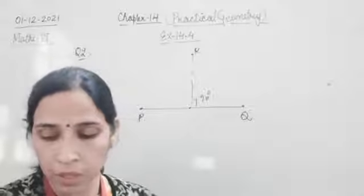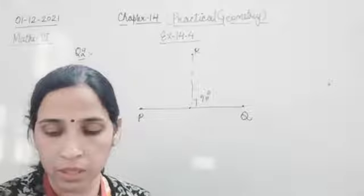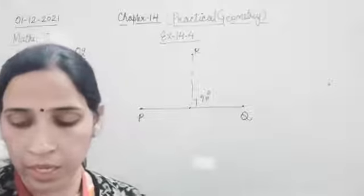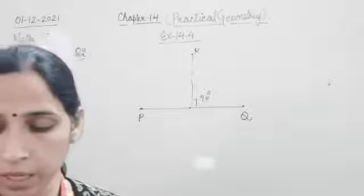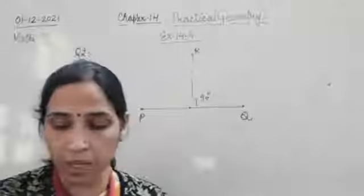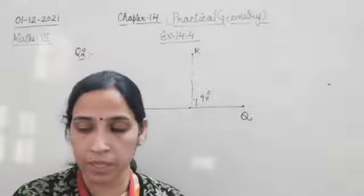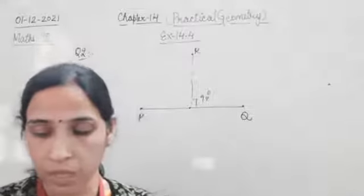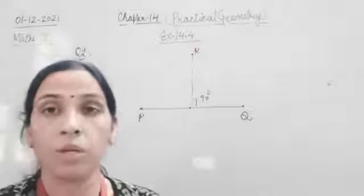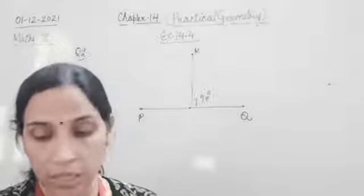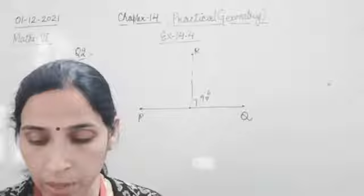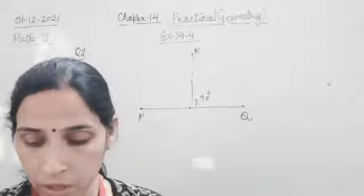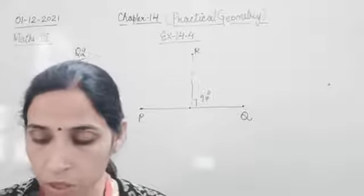Question 3: Draw line L, take a point X on it, and through X draw line segment XY perpendicular to L. Again, XY perpendicular can be drawn using the same method.